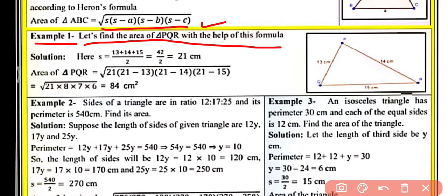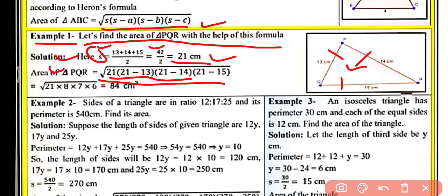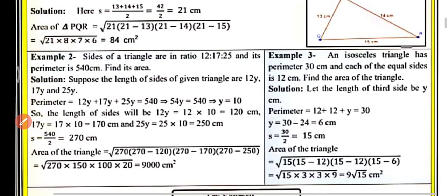We have triangle PQR in which PQ equals 13 cm, QR equals 15 cm, and PR equals 14 cm. So S equals (13 plus 14 plus 15) by 2, which is 42 by 2, equals 21 cm. Now the area of triangle PQR equals under the root of S into (S minus a) into (S minus b) into (S minus c). Putting all the values, we get 84 cm² as the area of triangle PQR.